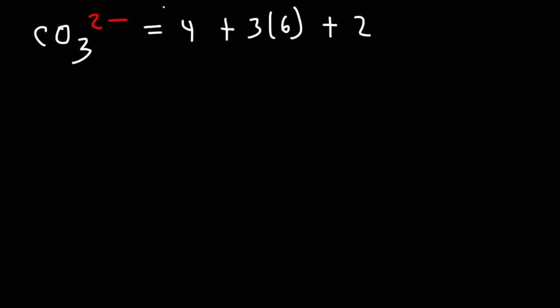Now we need to add two valence electrons because the overall charge of the polyatomic ion is 2-. So let's do the math. This is going to be 4, 3 times 6 is 18, 18 plus 2 is 20, and 20 plus 4 is 24.